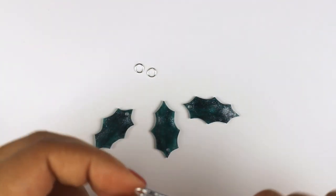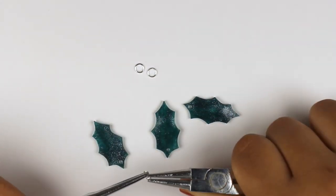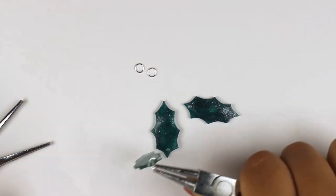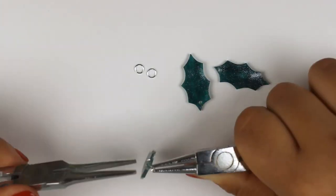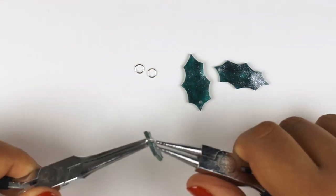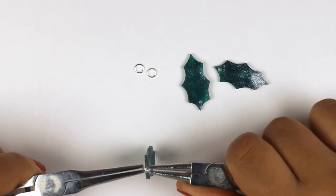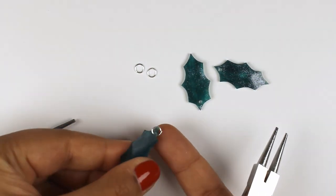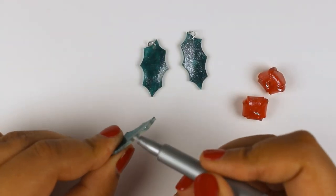The trick to opening jump rings is not to prise them open but to twist them open sideways, and then twist them back in place so that they lay nice and flush against each other and aren't likely to open up.